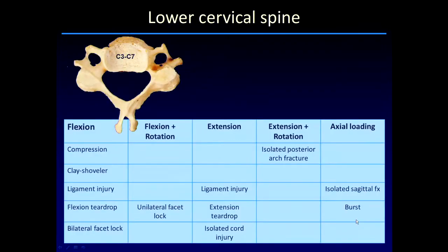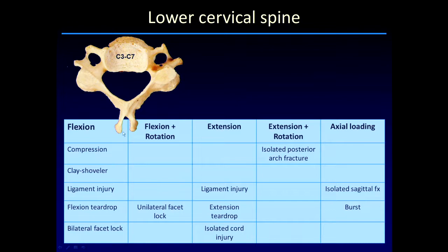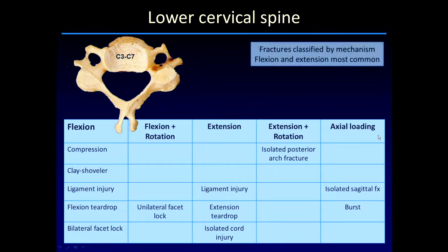As we move into the lower cervical spine, we start to divide the injuries by mechanism. The mechanisms in the cranial cervical junction are often unclear, but in the lower cervical spine we can divide the injuries into several predominant types — the most common of which are flexion and extension. You can combine either flexion or extension with rotation to produce various patterns of injury, and there are also injuries associated with pure axial loading.